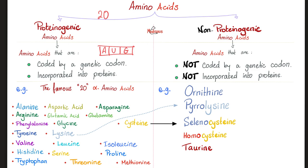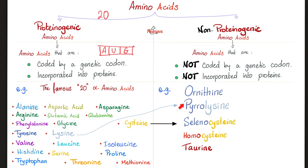And methionine — my favorite — because it gives you SAM, a methyl donor. How about the non-proteogenic amino acids? They are not coded by a codon; they are not incorporated into proteins. But they exist, such as ornithine — if you remember your urea cycle — pyrolysine, which comes from lysine and contains a pyroline ring or pyroline side chain; selenocysteine, which comes from cysteine (seleno means selenium); and homocysteine, which comes from cysteine.